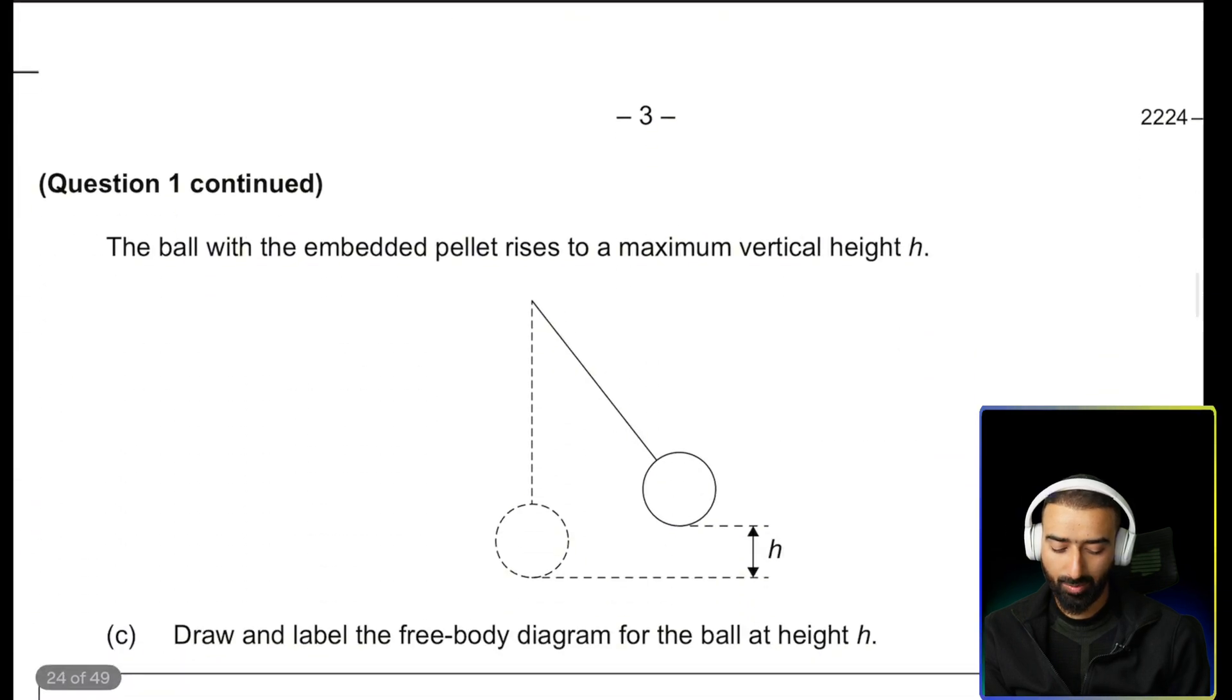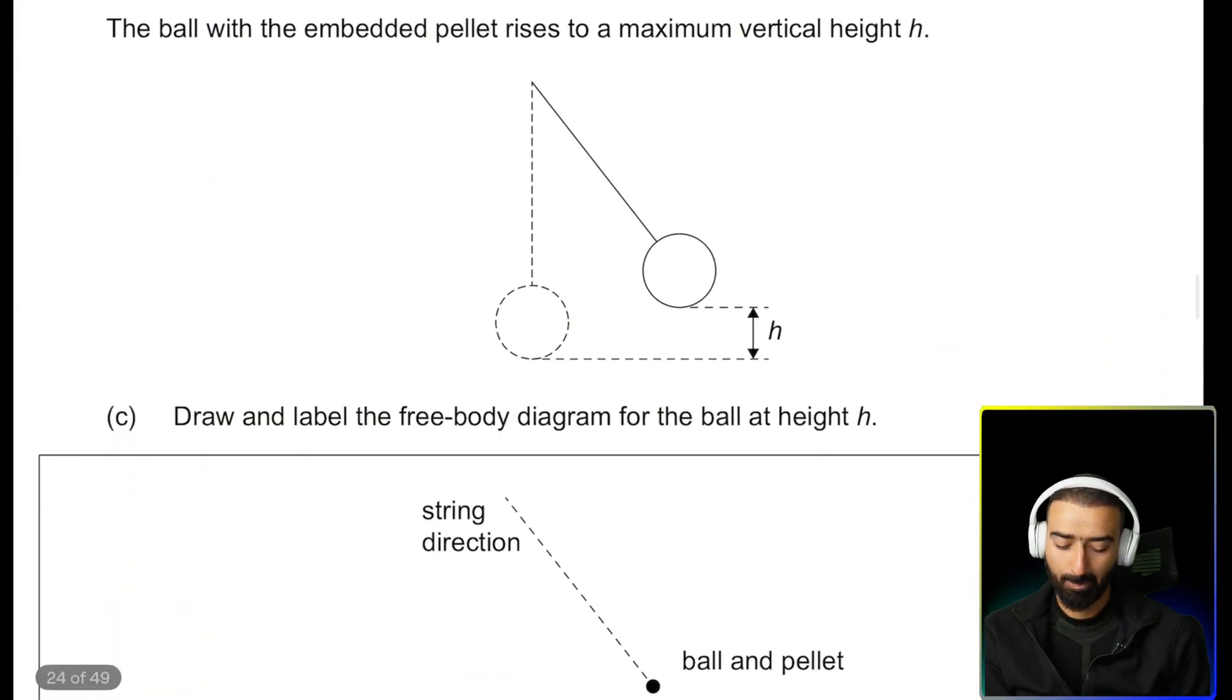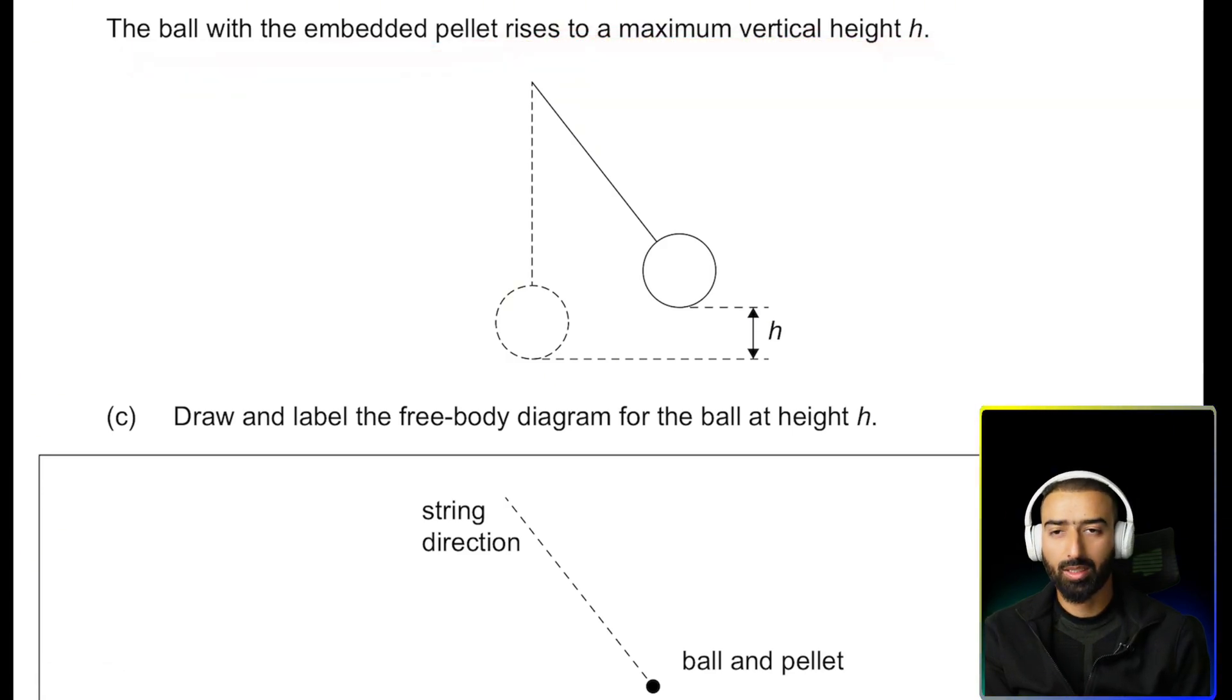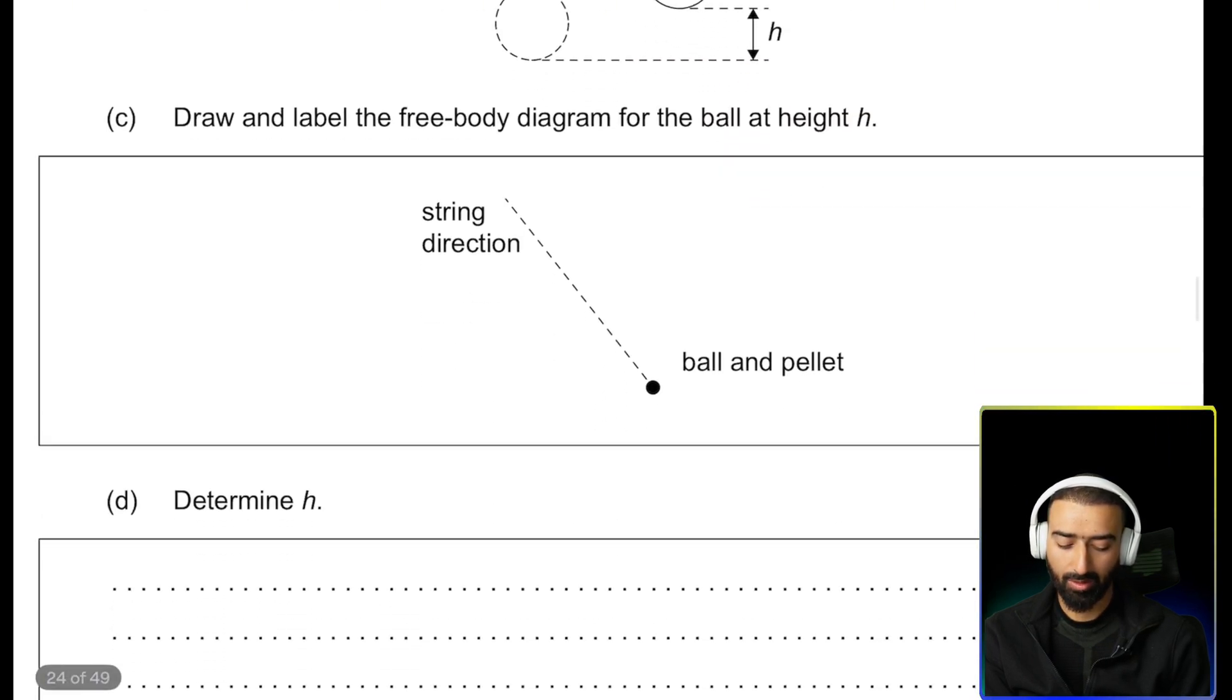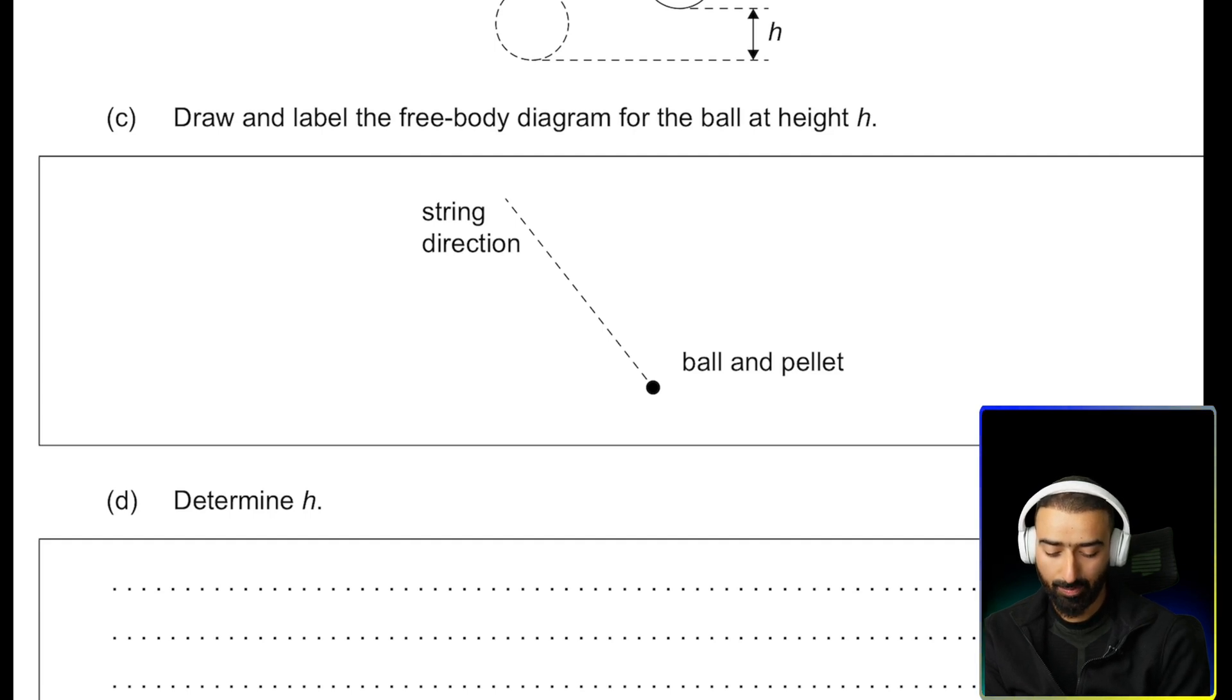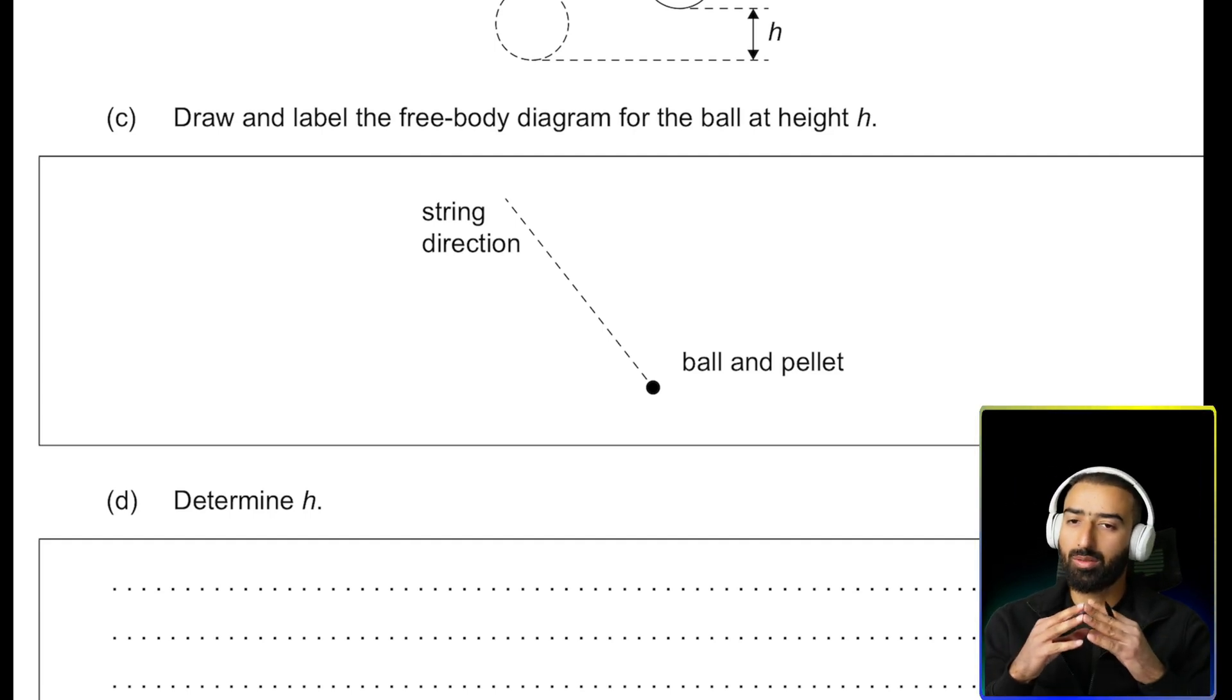Okay, let's move on to the next part. The ball with the embedded pellet rises to a maximum vertical height h. That's shown here. Draw and label the free body diagram for the ball at height h. Free body diagram means that you need to draw a dot, which is given here. And you need to show all the forces acting on that dot.